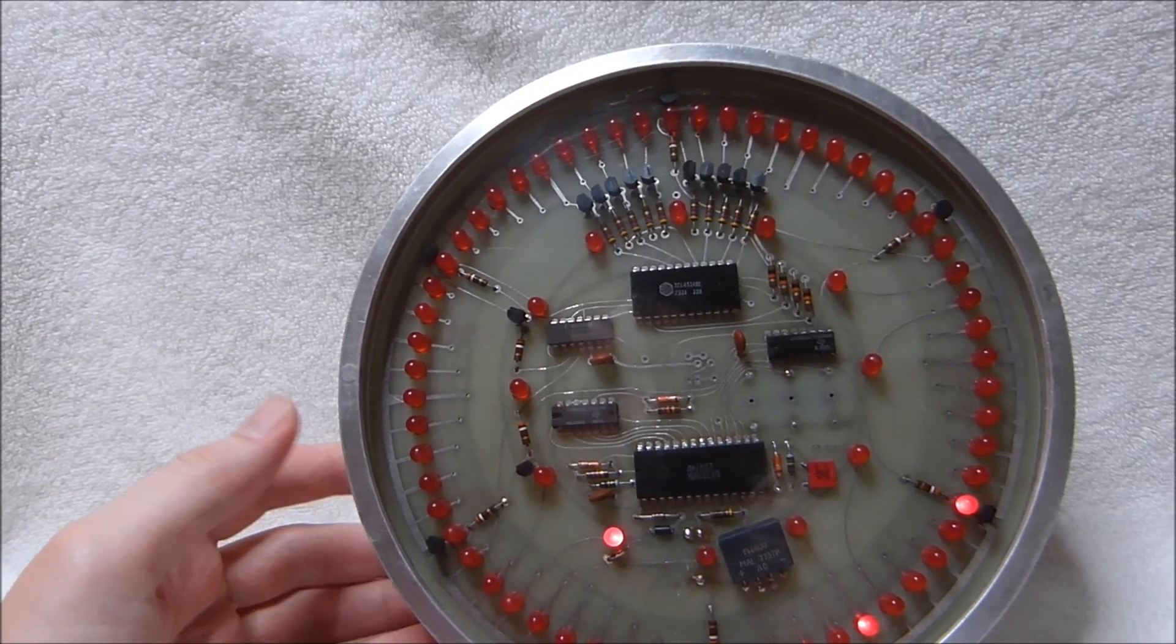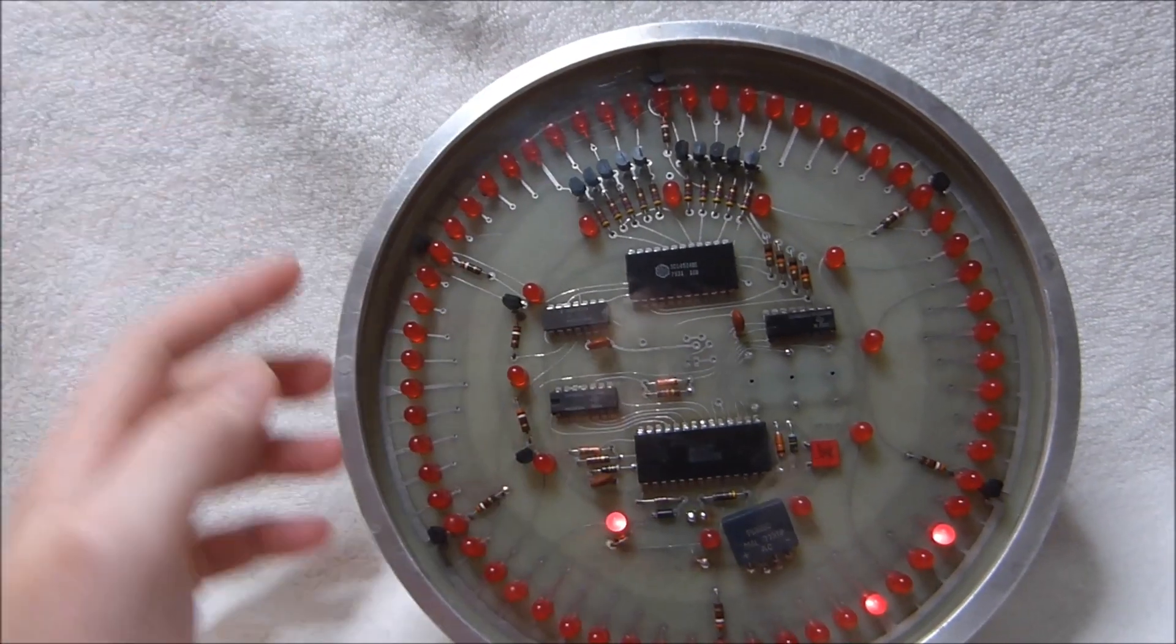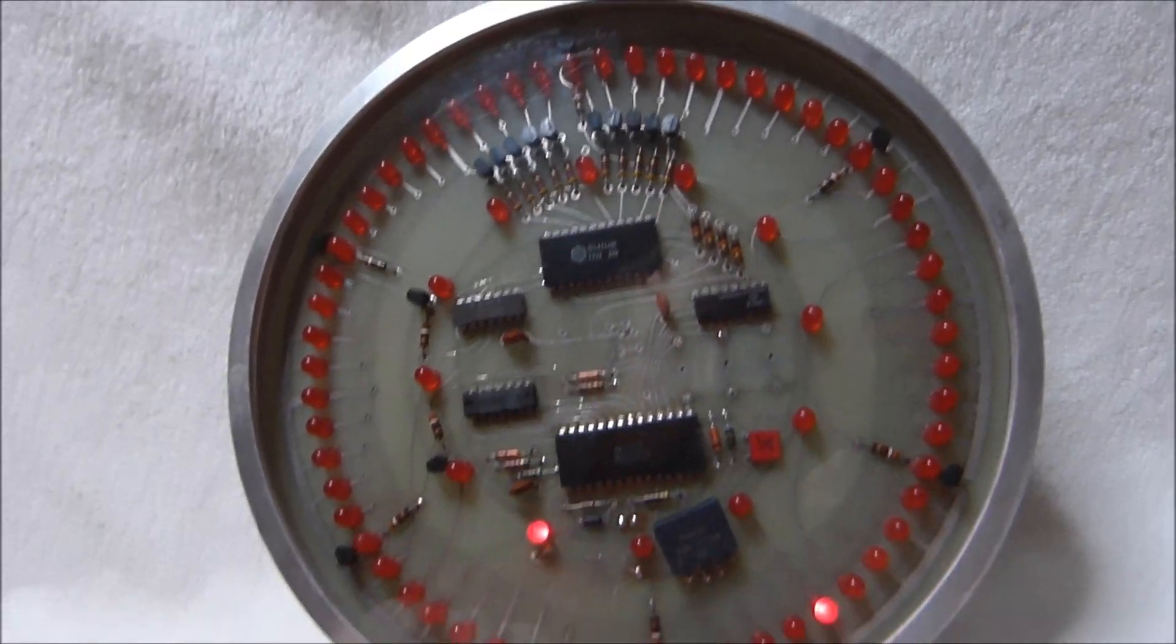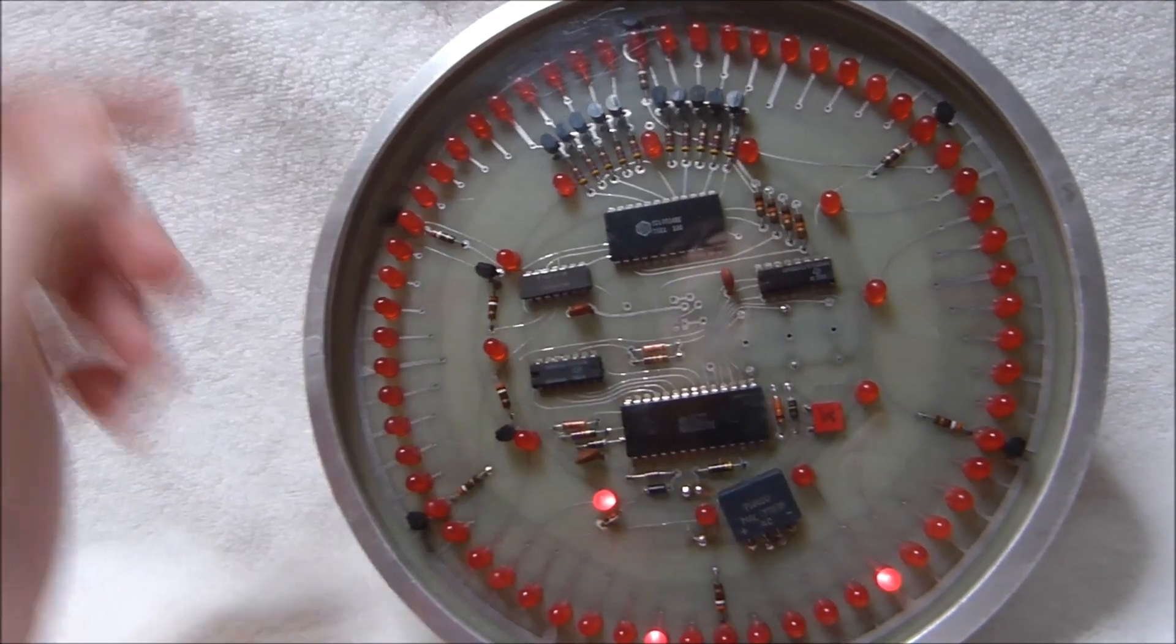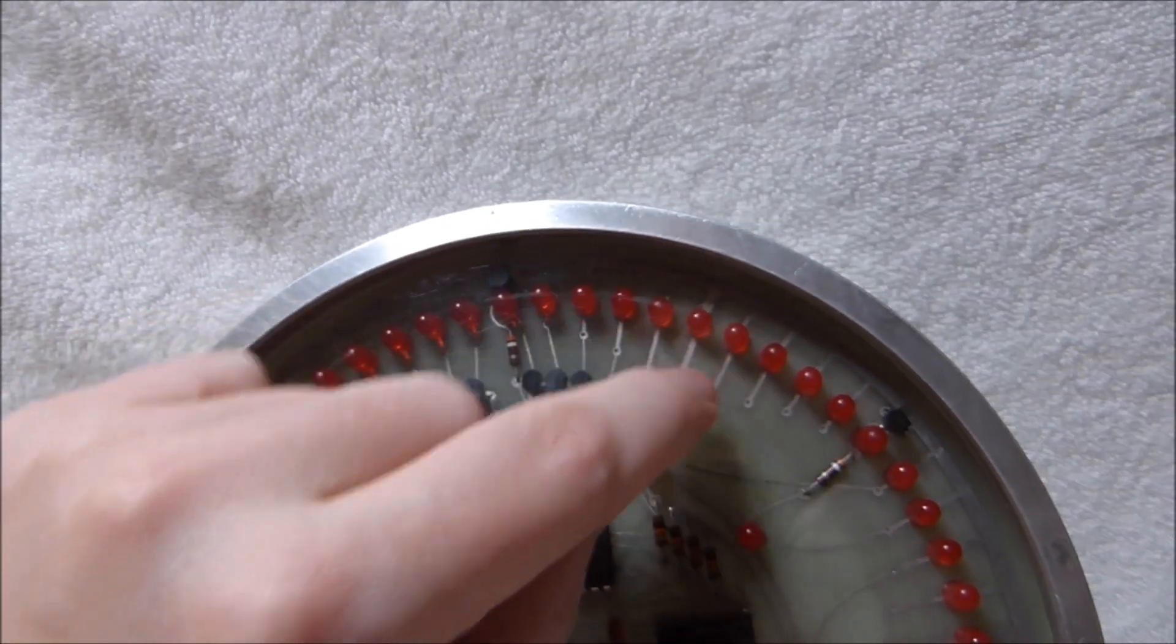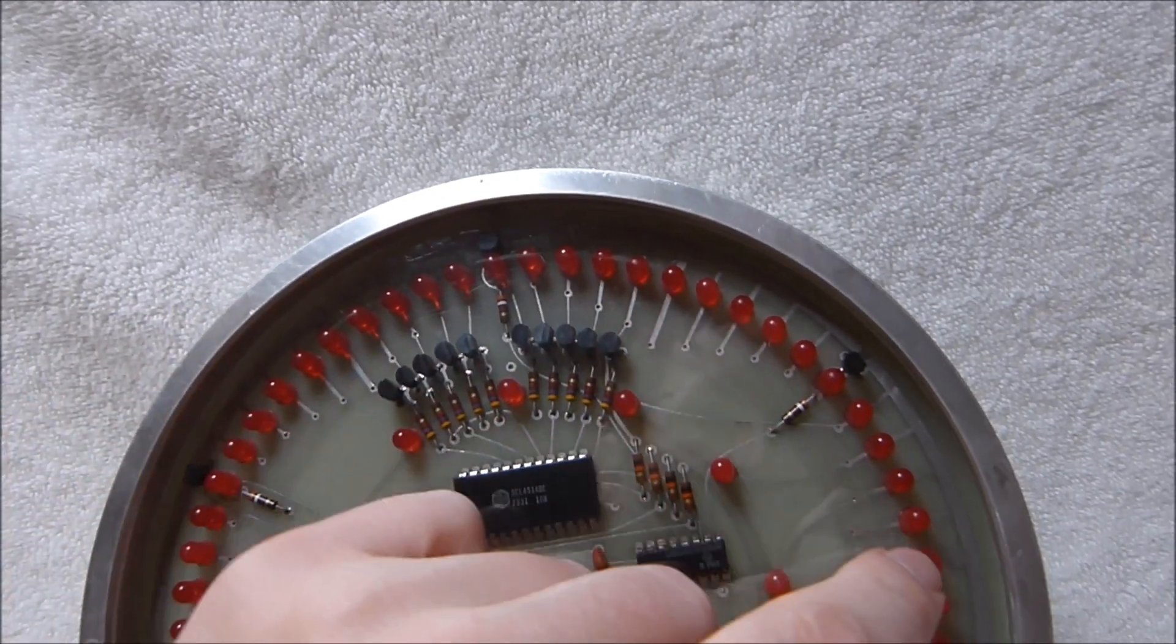Reading this clock would be quicker if there was markings around the edge at least every quarter hour. The resistors around the rim are spaced 10 minutes apart and then there's thicker traces on the five minute intervals between.